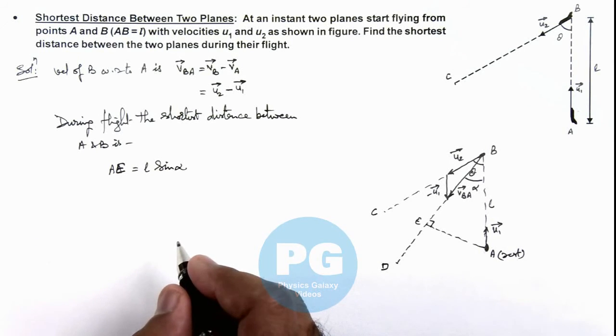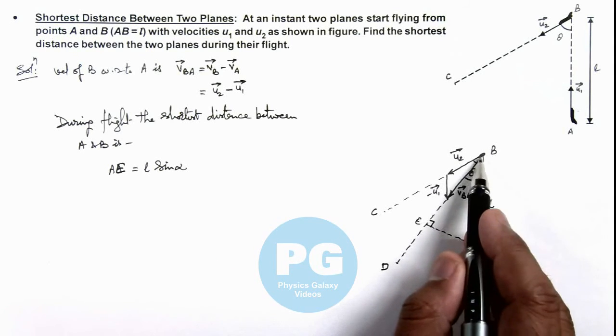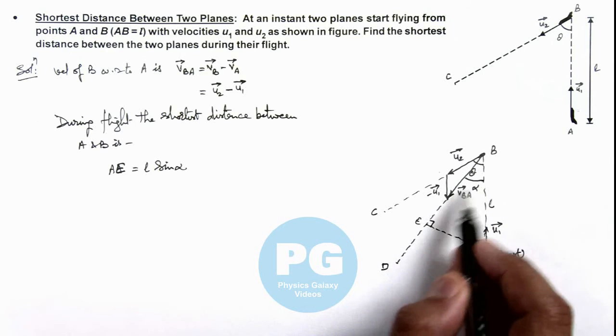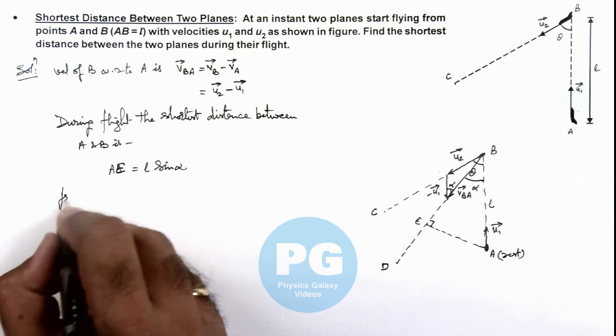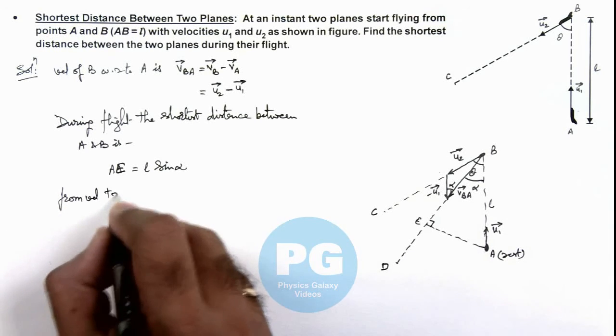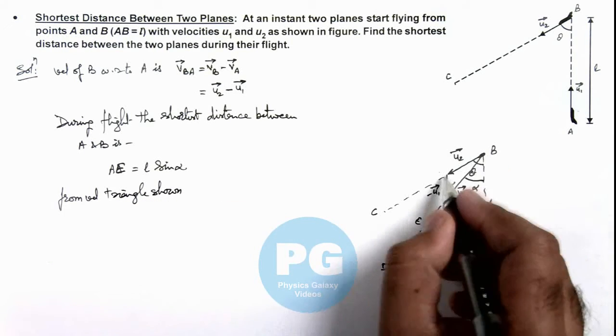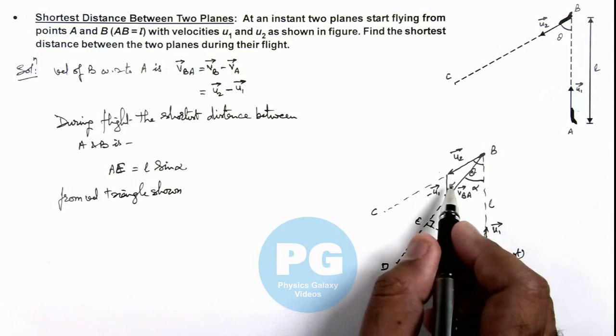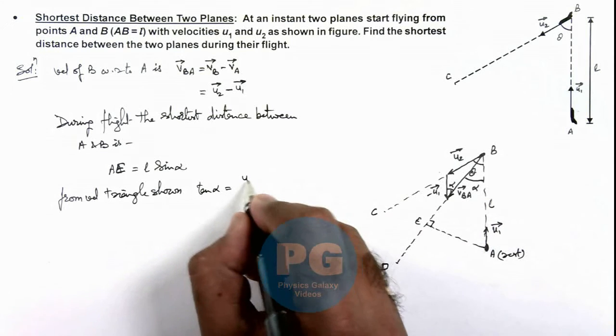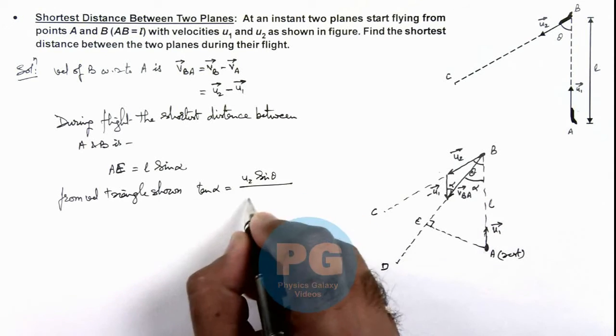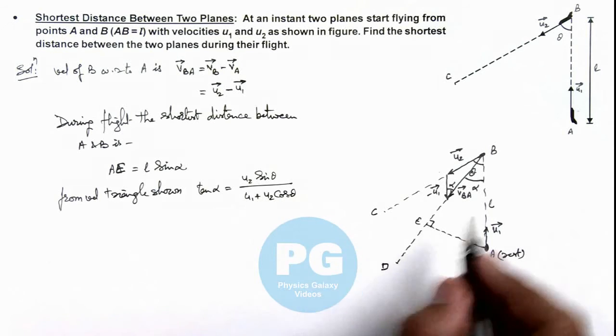And in this situation we can calculate the value of sin alpha from this velocity triangle. In this situation if this angle is alpha we can say this angle is also alpha. So we can write from velocity triangle shown where we have calculated the relative speed, the value of tan alpha is equal to u2 sin theta divided by u1 plus u2 cos theta, written by using parallelogram law of vector addition.